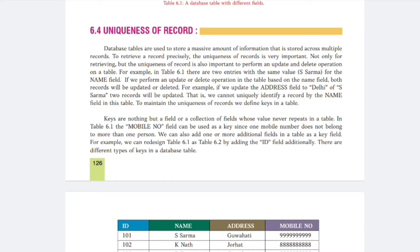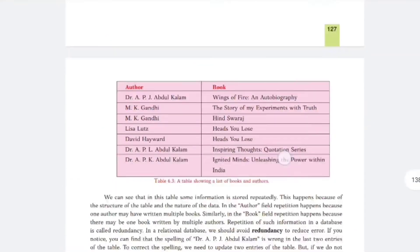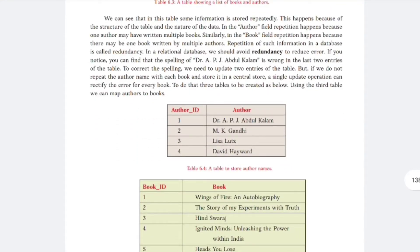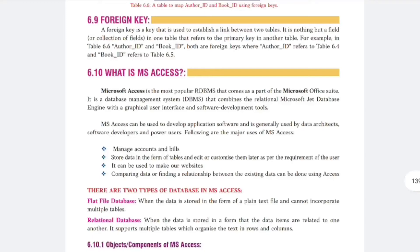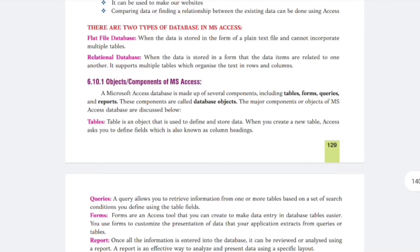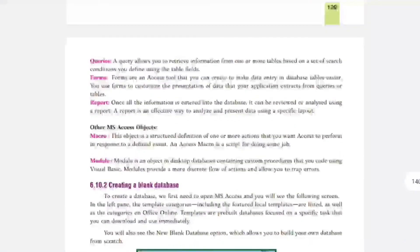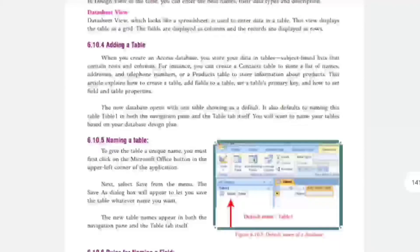Learn the definitions of DBMS and its full form, RDBMS and its full form, and redundancy. Redundancy means duplicate values — using a primary key, duplicate values are removed from records. RDBMS is an example of a relational system. Database objects include table, query, form, report, macro, and module. Learn these from the database chapter.